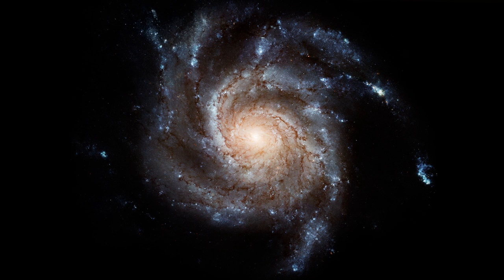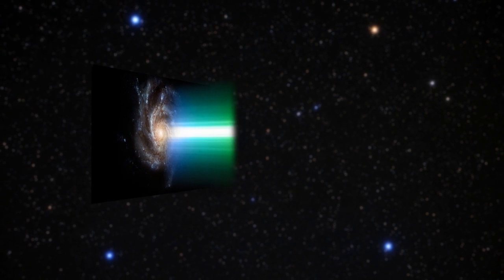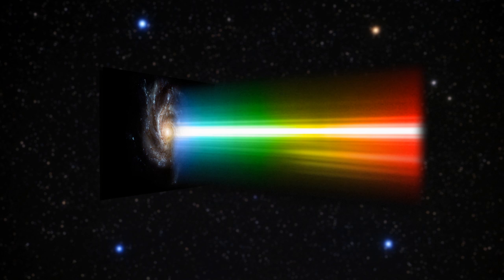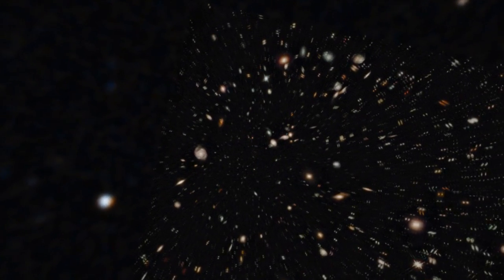A distant galaxy's spectrum reveals which elements it's made of. Every substance affects or emits light in a particular way, imprinting a series of bright or dark lines in the spectrum that betrays its presence. And by looking at the way these lines are shifted towards red or blue in the spectrum, Hubble sees whether they're moving towards or away from us. In the case of really far away objects, the redshift also tells us how distant the galaxy is.